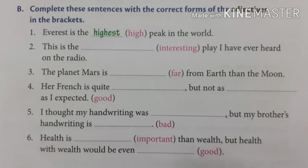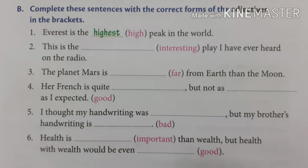'Everest is the highest peak in the world.' Here 'highest' is the adjective. Next sentence: 'This is the ___ play I have ever heard on the radio.' You have to use 'most' — 'This is the most interesting play I have ever heard on the radio.' Next sentence: 'The planet Mars is ___ from earth than the moon.' We use 'farther' — 'farther from earth than the moon.' And in the next sentence: 'Her friend is quite ___ but not as ___ as I expected.' Here we use 'good' — 'Her friend is quite good but not as good as I expected.'